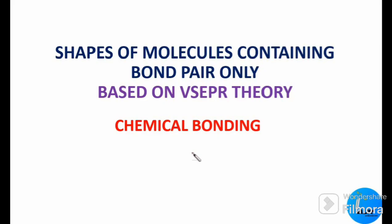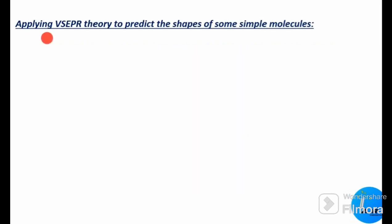Hello students, this is Dr. Anita Raj, your chemistry mentor, welcoming you for another session in chemical bonding. Today we are going to see shapes of some molecules containing bond pairs only, based on VSEPR theory. We shall apply VSEPR theory to predict the shape of some simple molecules — specifically those which have only bond pairs.